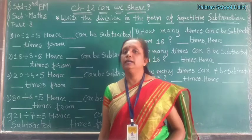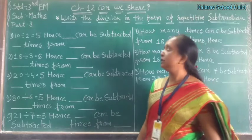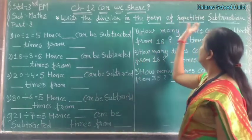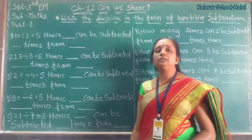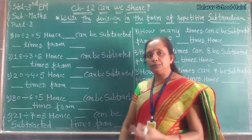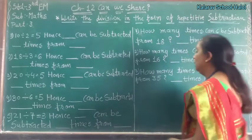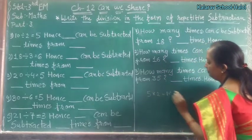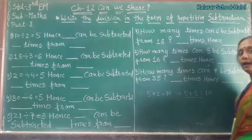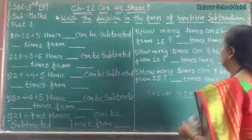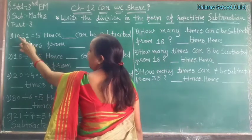Now let's start Chapter 2. Today we are going to see division in the form of repetitive subtraction. Children, division means repetitive subtraction, and multiplication means repetitive addition. Division is one type of subtraction. This is the symbol of division.